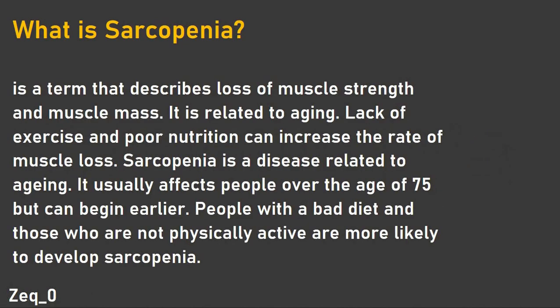Sarcopenia, in medical terminology, usually refers to loss of muscle strength and loss of muscle mass. It's related to aging, and poor diet might increase the rate of developing the disease. It usually appears in people above the age of 75, though it can begin earlier. People with bad diet who are not physically active are more likely to develop the disease.